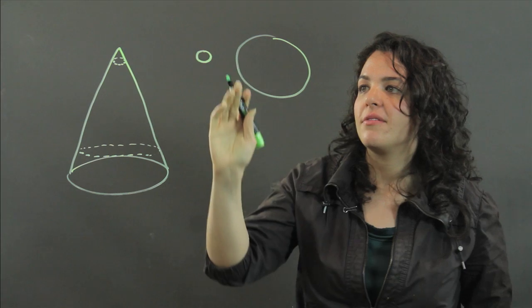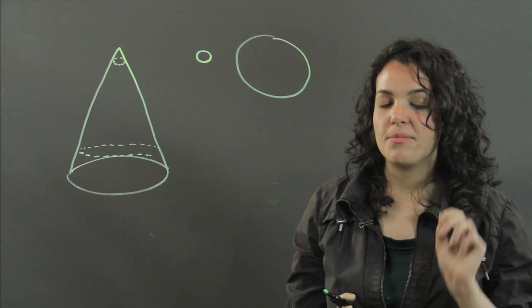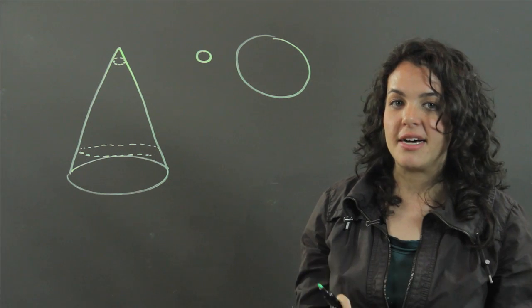So already we have two cross-sections that are not congruent. In order to be congruent, they must be the same shape and same size.